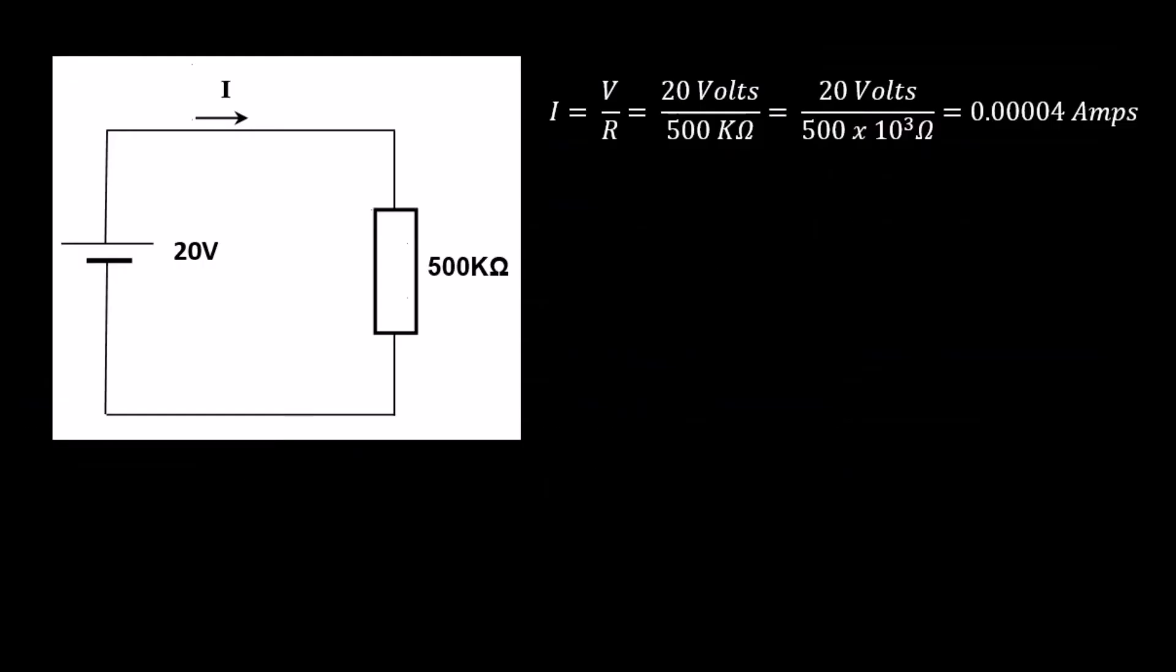This is a practical example now. So how do we use multiples and sub-multiples in a calculation? This is very important in any examination, any test, in any assignment. So we have a simple formula here, Ohm's law. Current is voltage divided by resistance. Here we have a voltage of 20 volts, but a resistance of 500 kilo ohms.